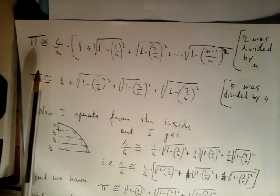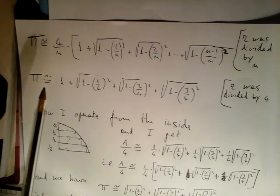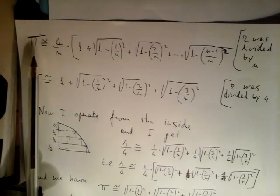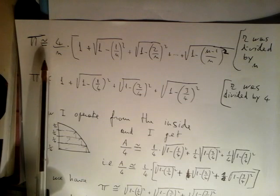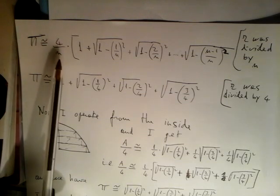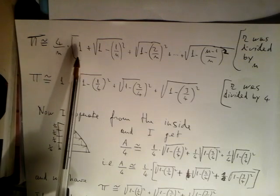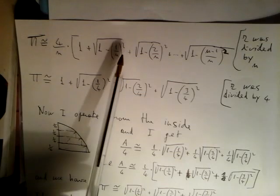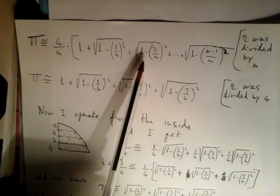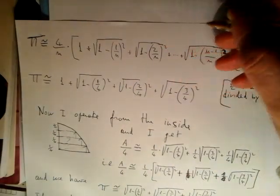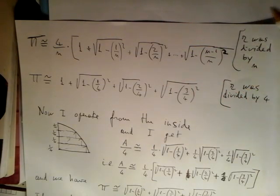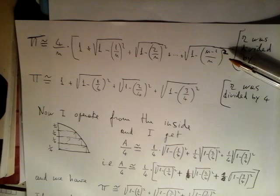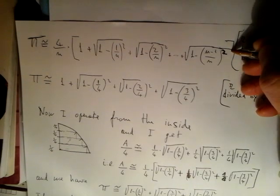We got these results. The number pi was equal approximately to 4 over n times square bracket 1 plus square root of 1 minus 1 over n squared, plus square root of 1 minus 2 over n squared, plus other terms till square root of 1 minus n minus 1 over n squared. Here I close the square bracket.